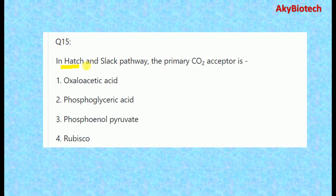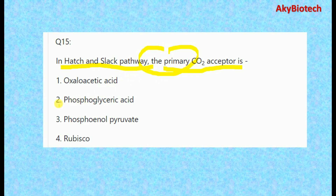Last question: in the Hatch-Slack pathway, the primary carbon dioxide acceptor is PEP, that is phosphoenol pyruvate.